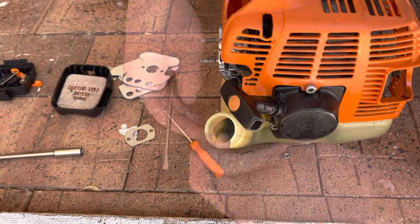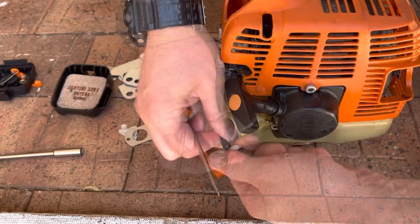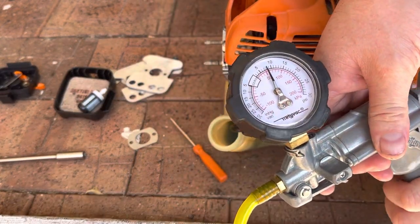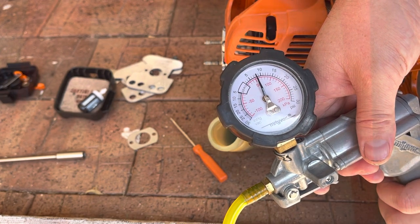These carburetors have an accelerator pump and we're going to dig into that a bit later but we'll always check the needle for sealing first. They can get a bit of debris under them but this one's pumped up to 7 psi and it's holding fine.